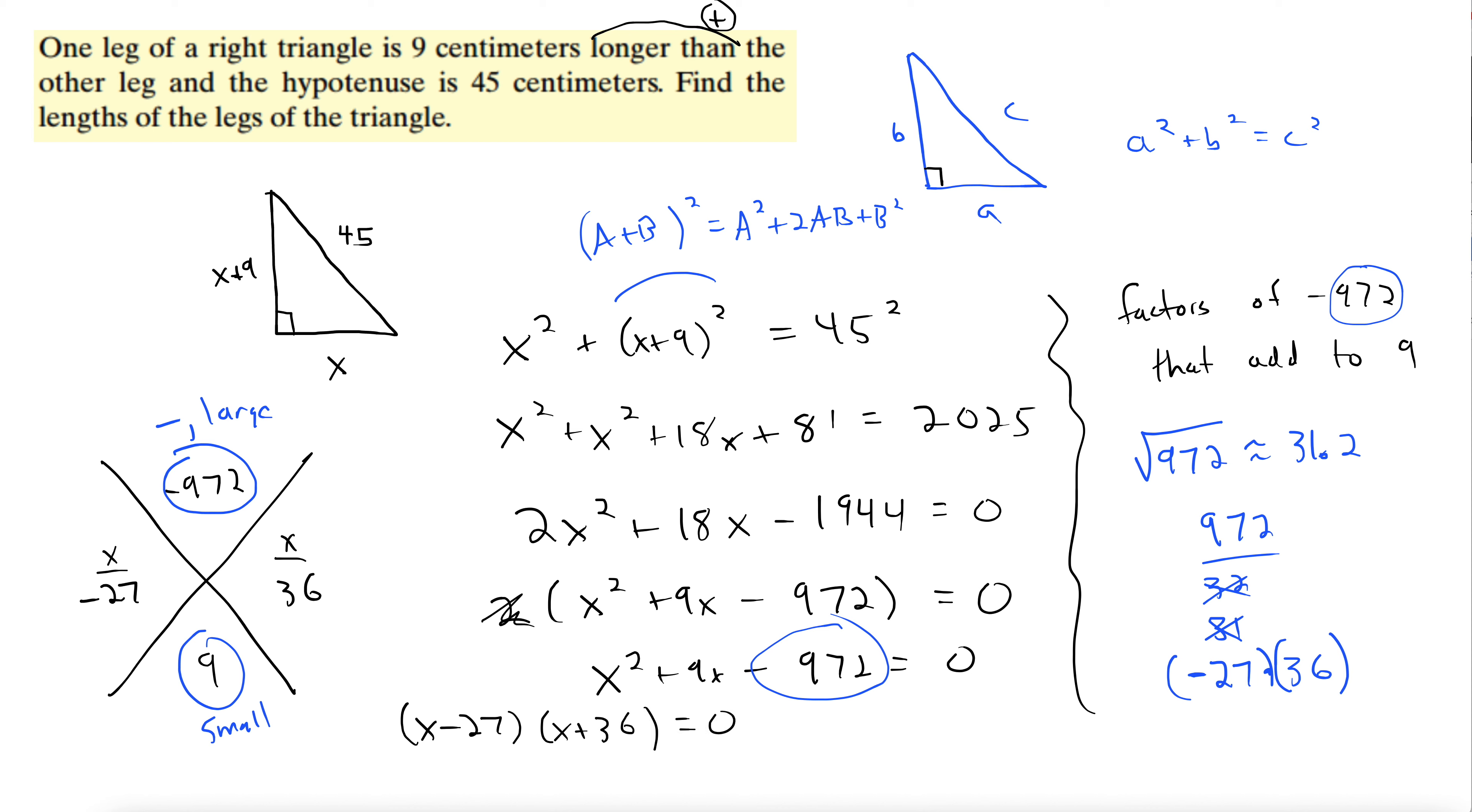Equals 0. Setting each one of these factors equal to 0 and solving gives us x equals 27, x equals negative 36, which we promptly toss out. Because we don't want to have a negative length here for this triangle. Remember x is the length of this side. So here we go. We're almost done. It says find the lengths of the legs of the triangle. Legs. So this base leg is going to be, let's switch over to blue here. This will be 27 centimeters. So there's the answer for the shorter leg. And then this one here, we add 9 to that. 27 plus 9 is 36 centimeters. There's the longer leg.